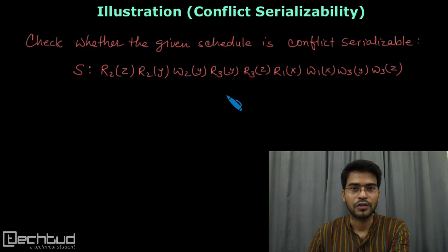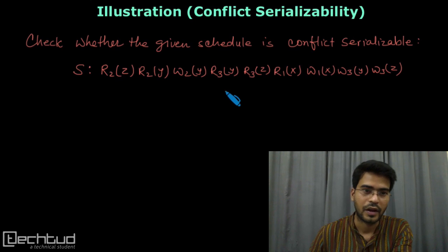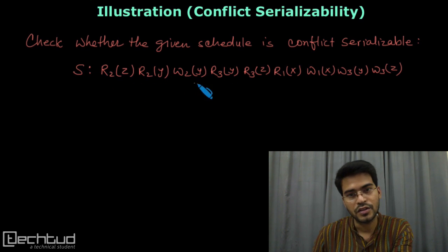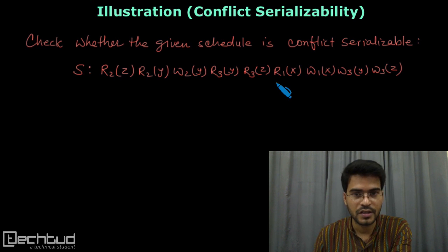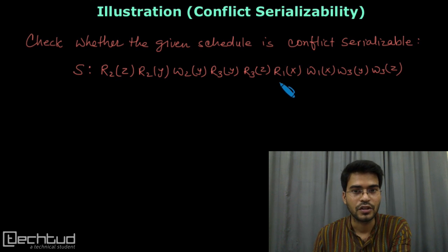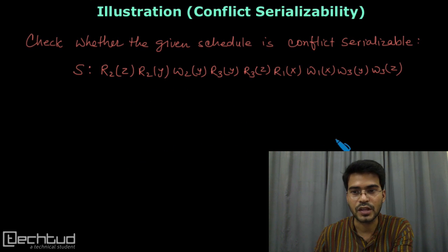Hello everyone, welcome to techtro.com. We have an illustration here and we will solve a problem. We have been given a schedule and we need to check whether the schedule is conflict serializable. We have already studied the method of constructing a precedence graph to check this. We start by taking the number of nodes equal to the number of transactions.